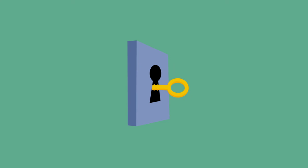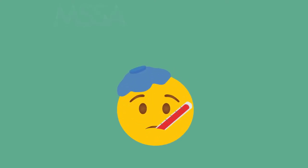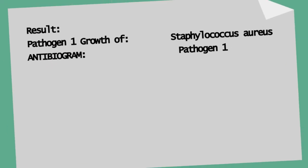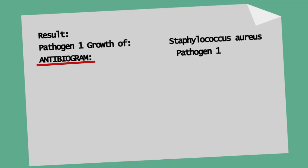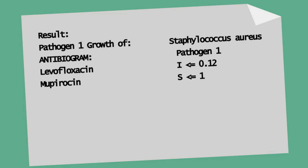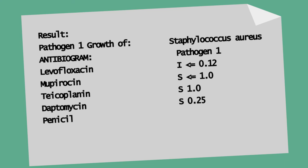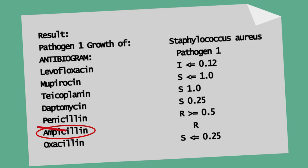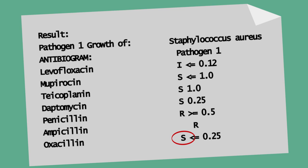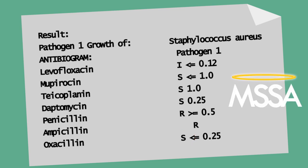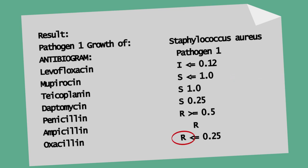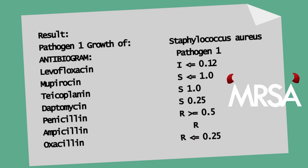How do you know if your patient has MSSA or MRSA? Easy — you need the antibiogram. There are always two steps: one, check which bacteria grows in the sample; two, check if it is oxacillin susceptible. Penicillin — no. Ampicillin — no. It needs to be oxacillin. If it is oxacillin susceptible, then you have MSSA. If it is oxacillin resistant, then you have MRSA.